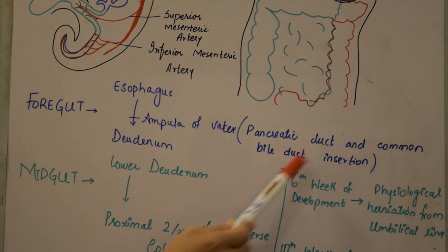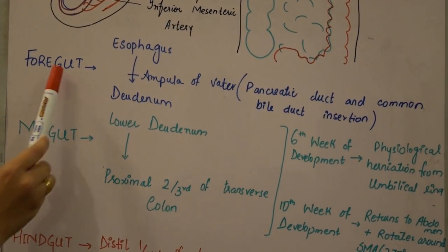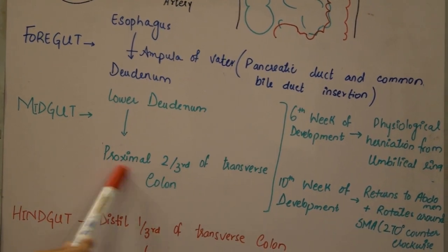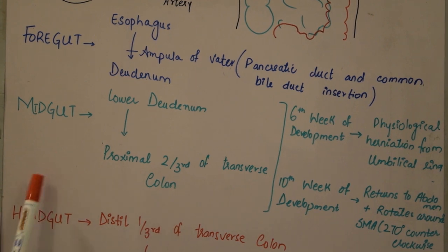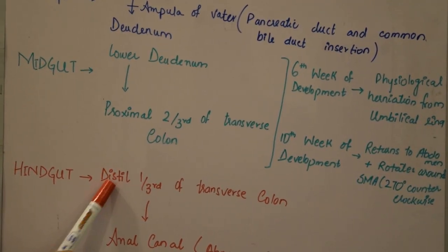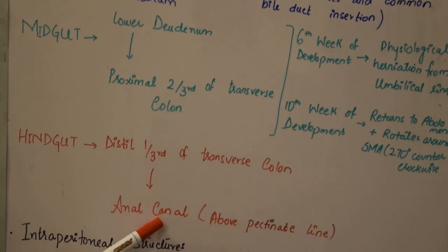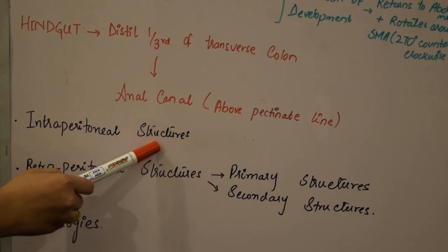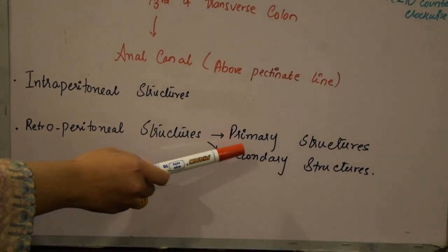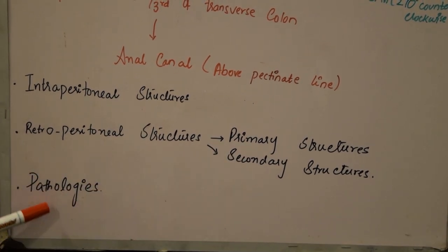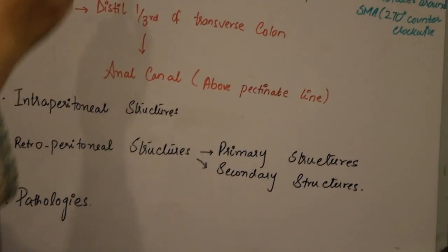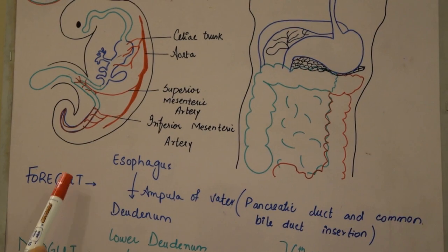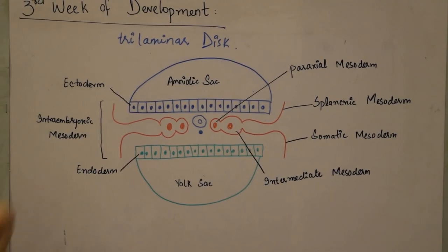After the foregut, I'll cover the midgut, which starts from the lower duodenum and ends at the proximal two-thirds of the transverse colon. Then the hindgut, which starts from the distal one-third of the transverse colon and ends at the anal canal just above the pectinate line. I'll also cover intraperitoneal and retroperitoneal structures, including primary and secondary structures, important pathologies, mesenteries, and vascular supply of all three gut parts.